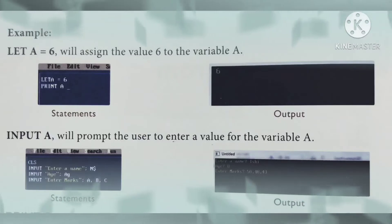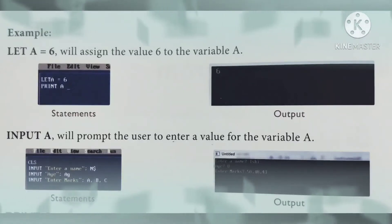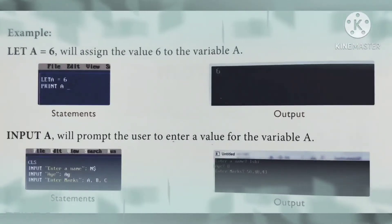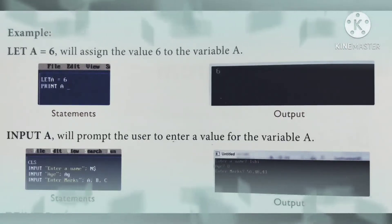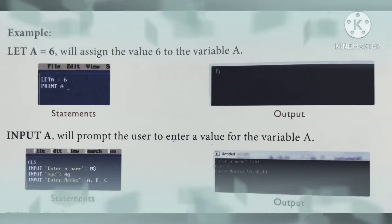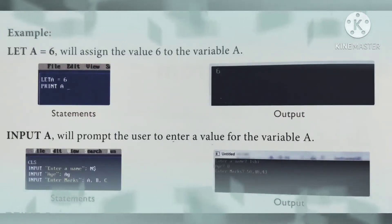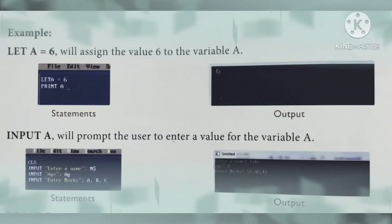Ab next example lete hai — INPUT. Ab INPUT kya karta hai? Ki value ko accept karta hai variable ke liye. So it will prompt the user to enter a value for the variable a. Ki hum a ki value pahle se nahi likhenge — hum Enter a name ya Enter a number kuch bhi likhenge, toh wuh value humse puchhe ga. Jaysa ki program mein dekh sakte hai — CLS, INPUT enter a name — tab wuh humse puchhe ga enter a name question mark, tab hum name daalenge. Phir INPUT age — to wuh humse age puchhe ga. Isi tariqe se enter a marks — to wuh marks puchhe ga. Is tariqe se LET aur INPUT command use ki jati hai.